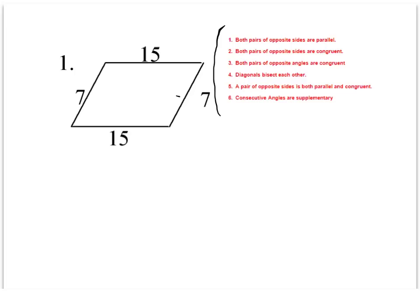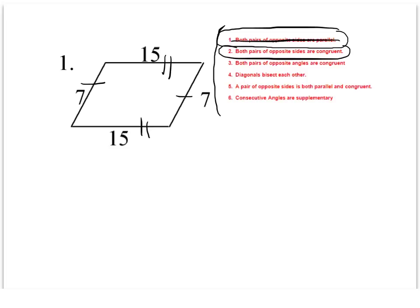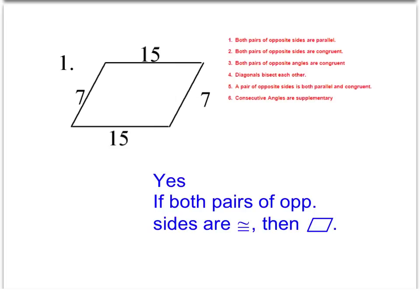For our first one, we're given two sets of opposite sides that are congruent, and if we look at our tests, that's going to be that first theorem that says both pairs of opposite sides are congruent. So this is a parallelogram, and we're going to put our answer in the form of a conditional statement: if both pairs of opposite sides are congruent, then this is a parallelogram. Remember, this is the symbol for parallelogram and this is the symbol for congruent.